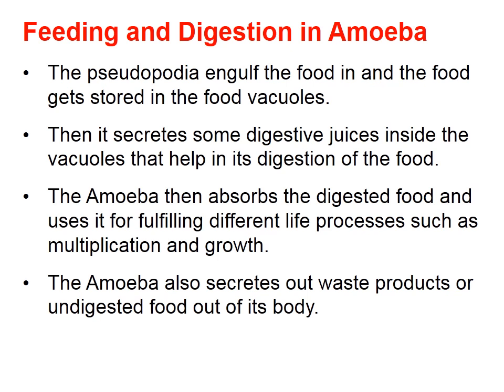Amoeba uses something called pseudopodia to feed. Pseudo means false and podia means feet. Because it is a single-celled organism whose cell shape can change, it makes finger-like projections out of its cell to capture food particles. After capturing, the food particle goes to a portion of the cell called the food vacuole, which is an empty space inside the cell. Inside the food vacuole, digestive enzymes are released and the food gets digested.